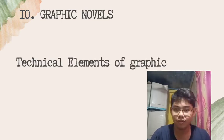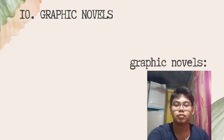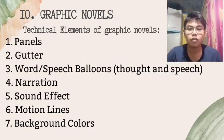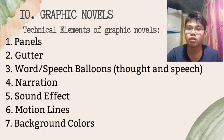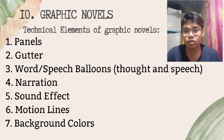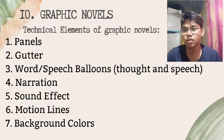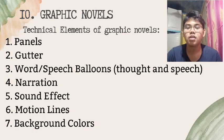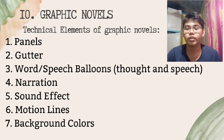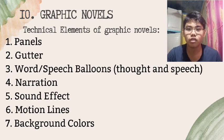There are seven technical elements of a graphic novel. The first element is the panel — panels are the squares or rectangles you can see in a graphic novel that contain a single scene. The second element is the gutter — the space between each panel.